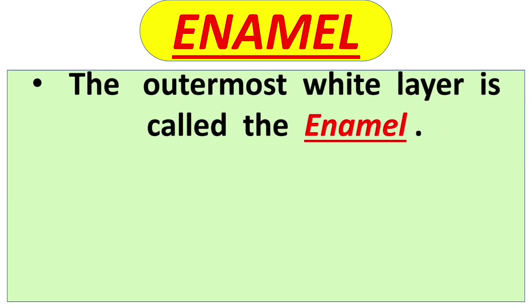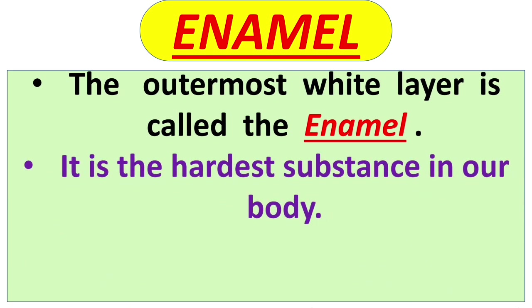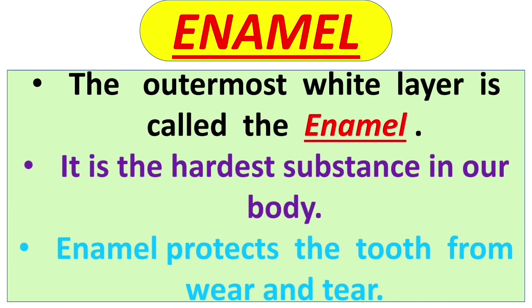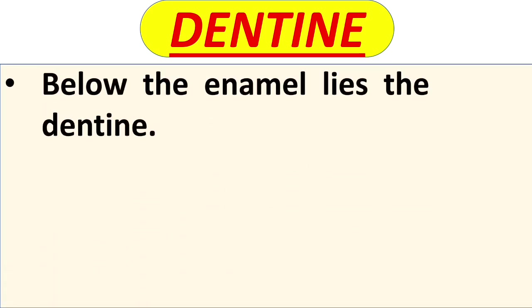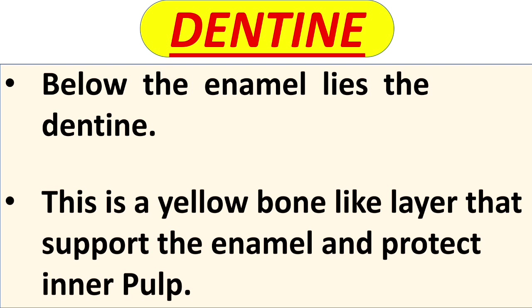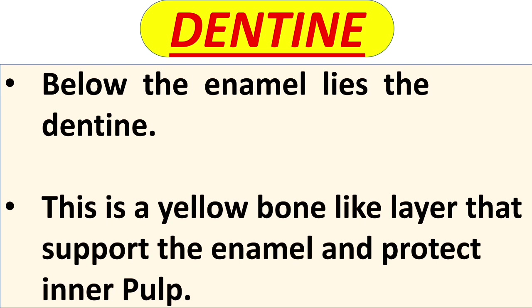First is enamel. The outer part of the tooth with the white layer is enamel, and you can easily see it. It is the hardest substance in our body and it protects the tooth from wear and tear. Next is dentine. It is softer than enamel and it is below the enamel. It is a yellow bone-like layer that supports the enamel and protects the inner pulp.